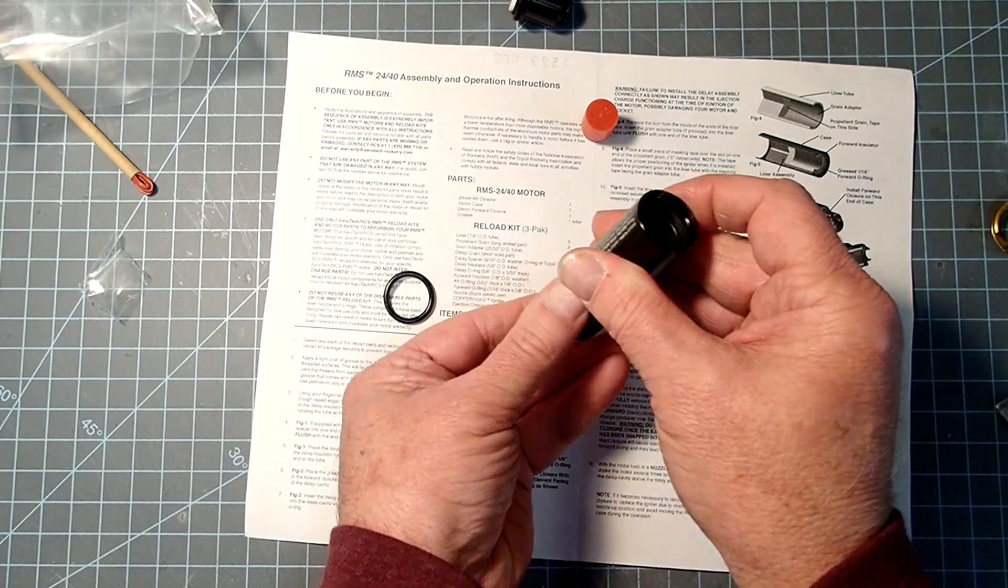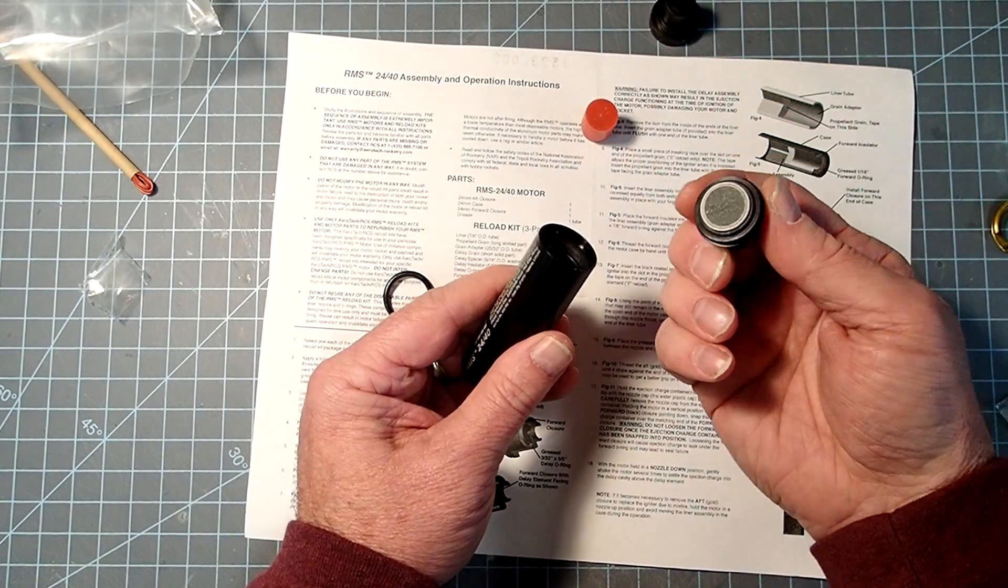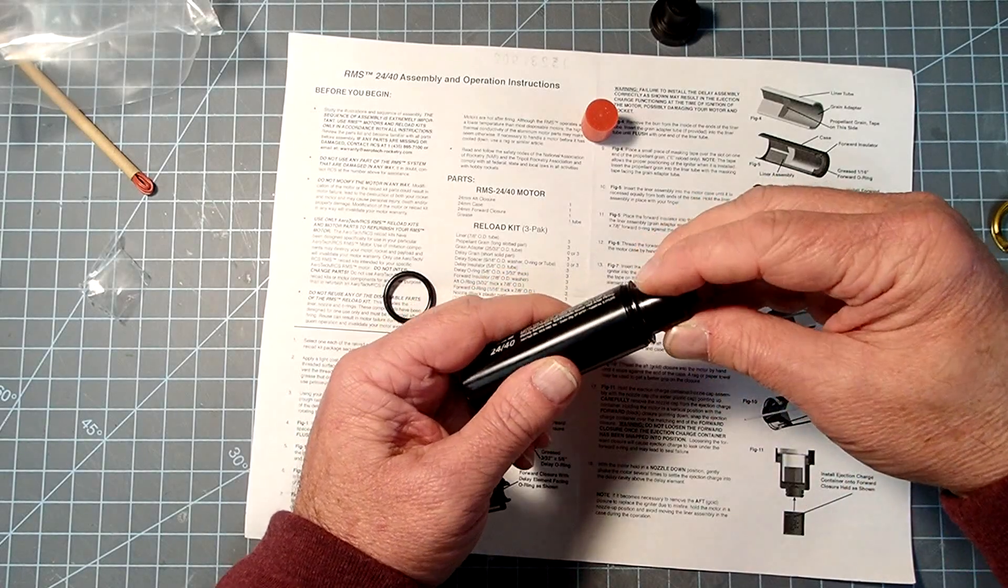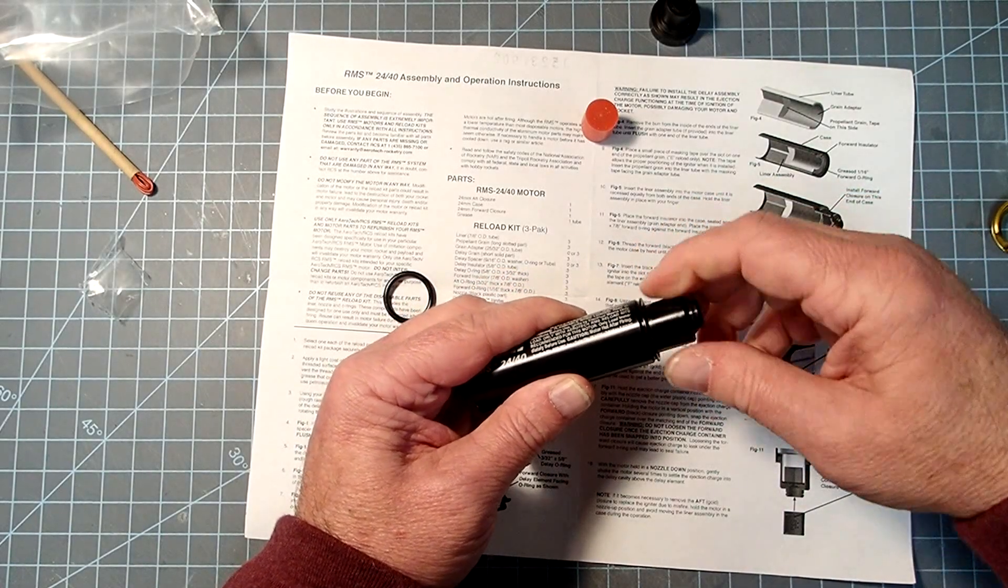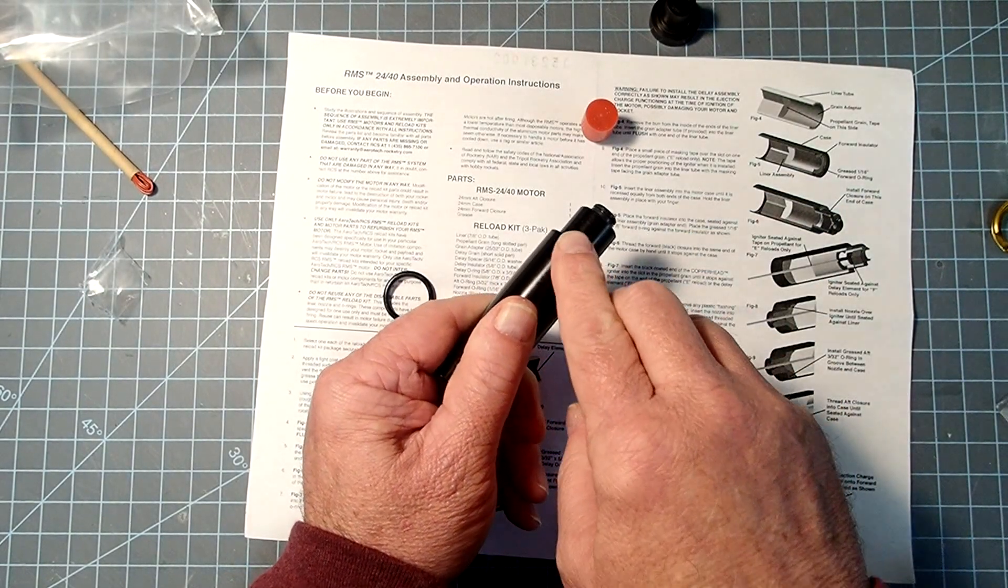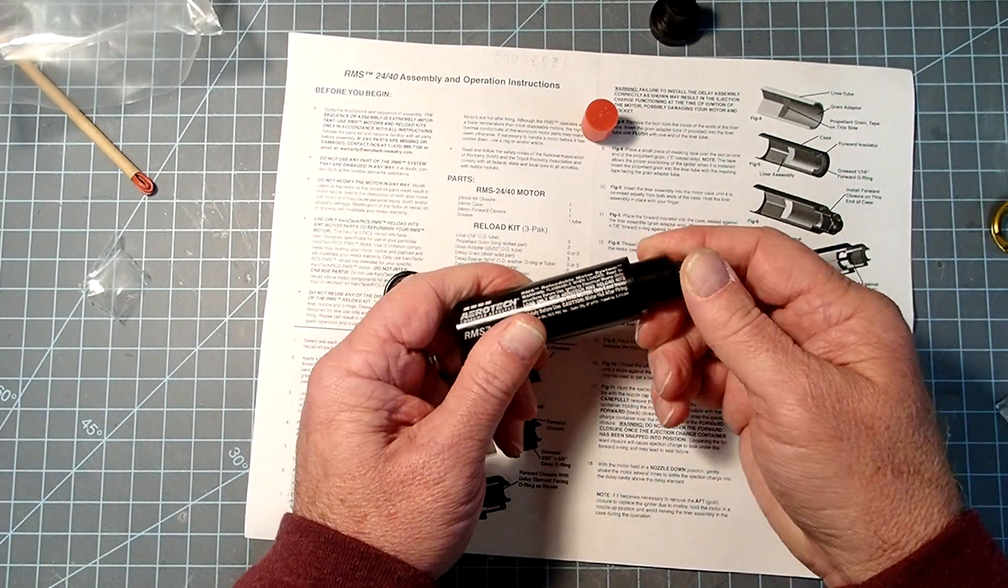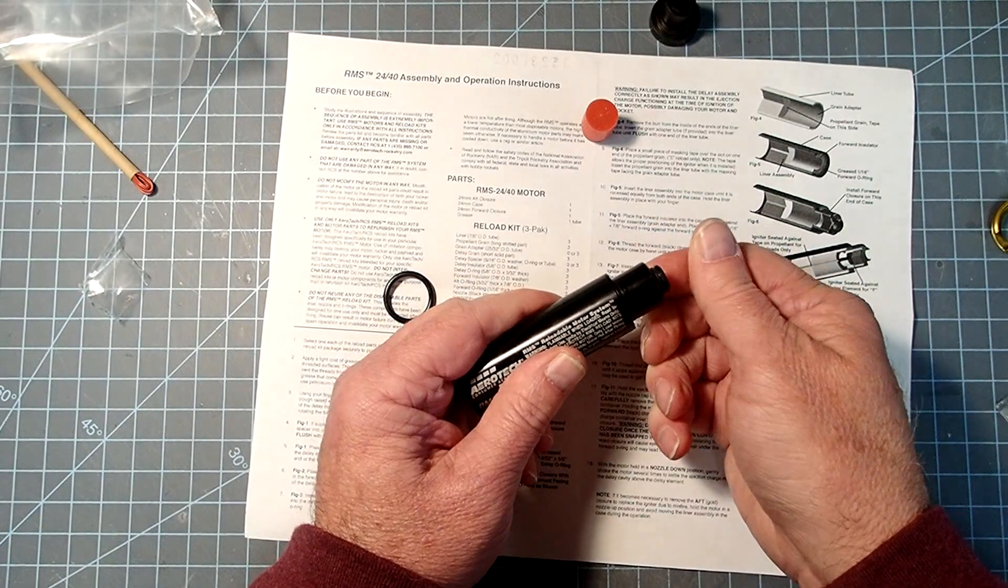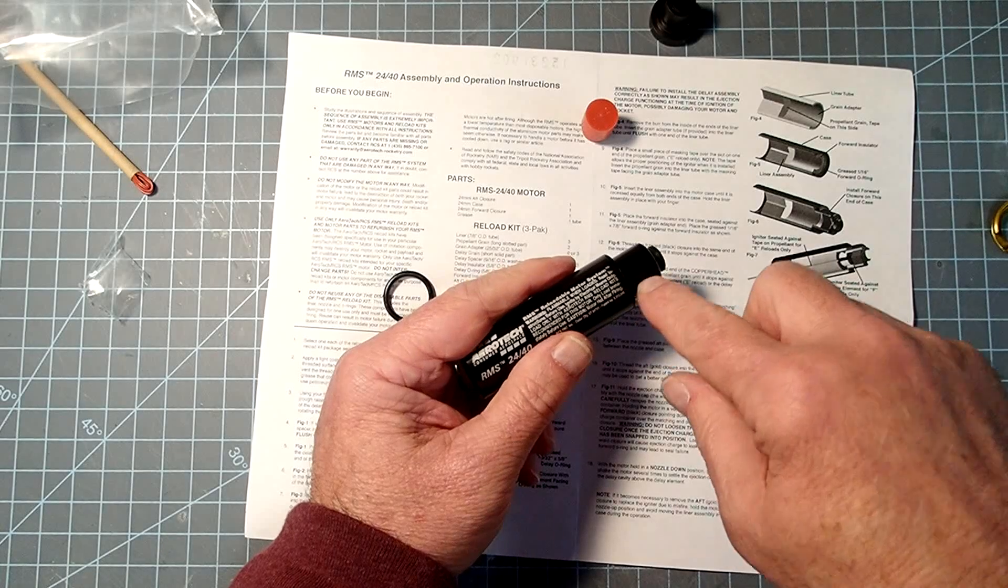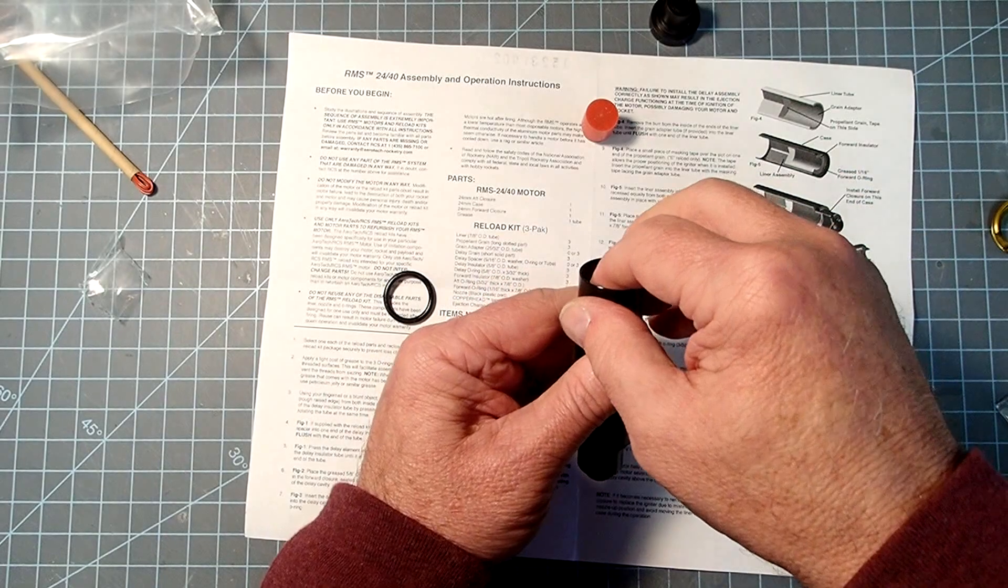It's okay if you push it down, you push it back up again. Now we'll take the forward closure here where we already mounted the delay grain and screw that on. And that should very easily come all the way down to the edge of the motor casing there. If it's stuck or if it's not going in easily, don't force it. Back it off. Make sure you haven't cross-threaded it or that you've got the O-ring stuck in the threads. Now, from the aft end, go ahead and push that forward.